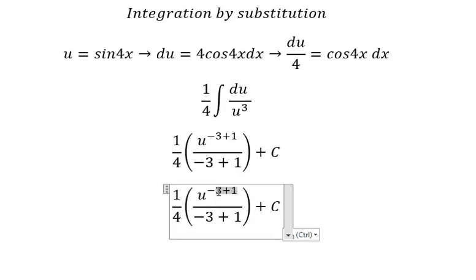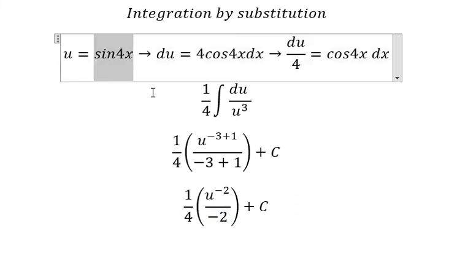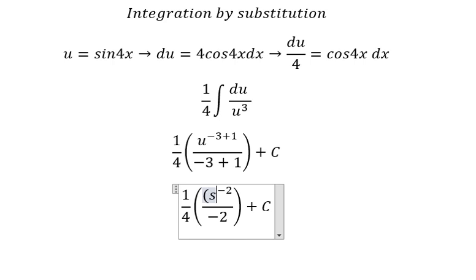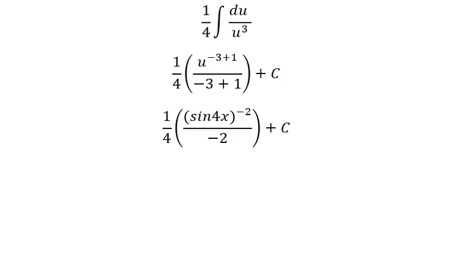This one we have negative number 2. This one we have negative number 2, u that's sin 4x. Negative 2 with number 4, we have negative number 8.